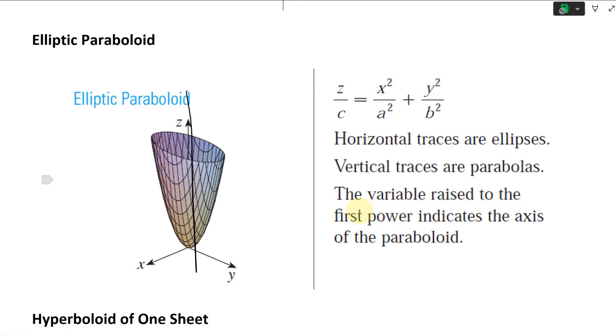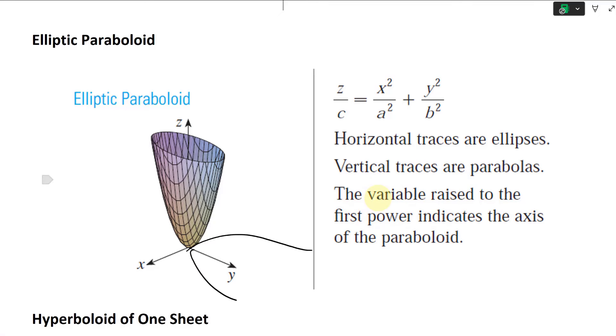So the z variable is the axis in this case. If it was the x variable raised to the first power, the paraboloid would be opening up in the x direction. If it was the y variable, the paraboloid would open up in the y direction.